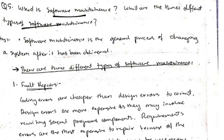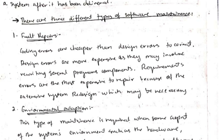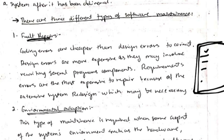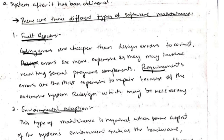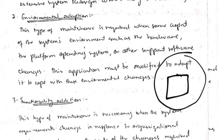Software maintenance is the process of changing a system after it has been delivered. There are three types: fault repairs — fixing coding errors, design errors, and requirements errors; environmental adaptation — when the environment of the product changes and the product must be adapted to that environment; and functionality addition — modifying the code to add new functionality.